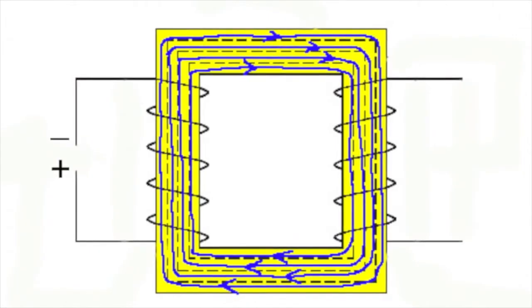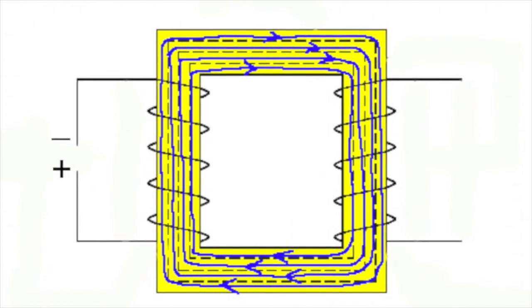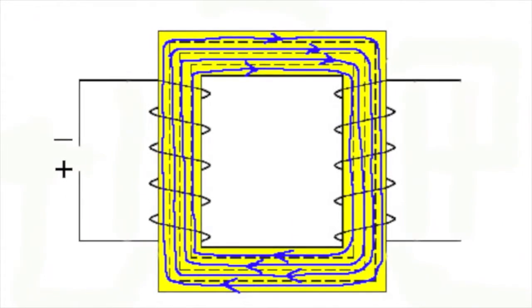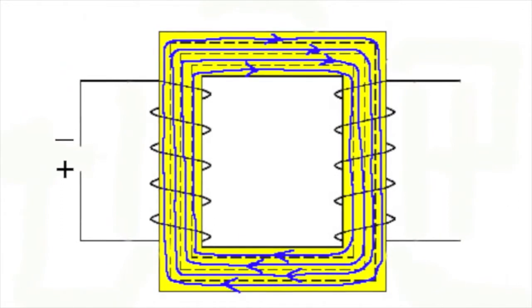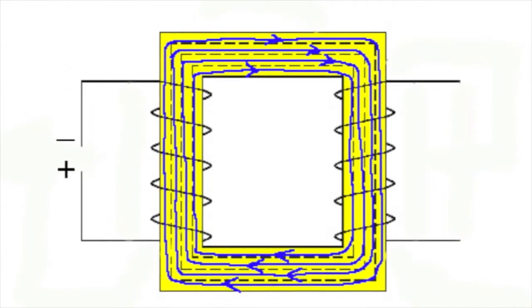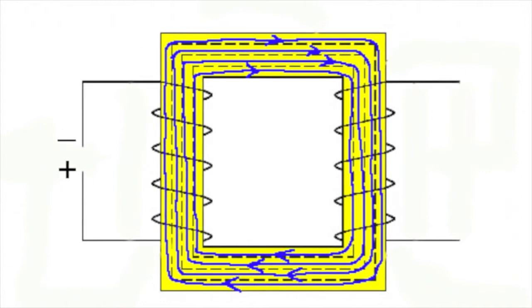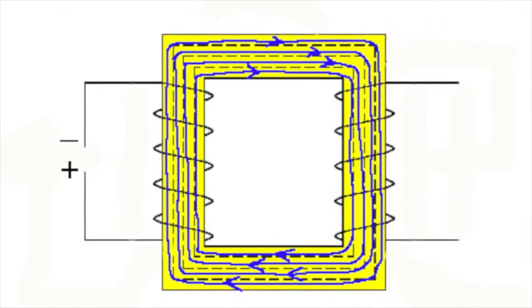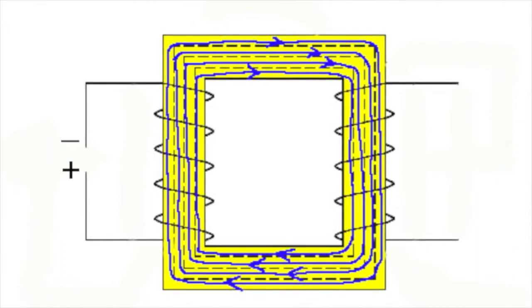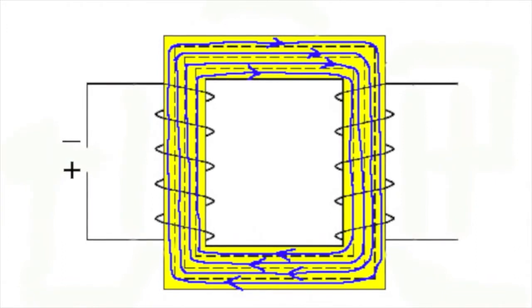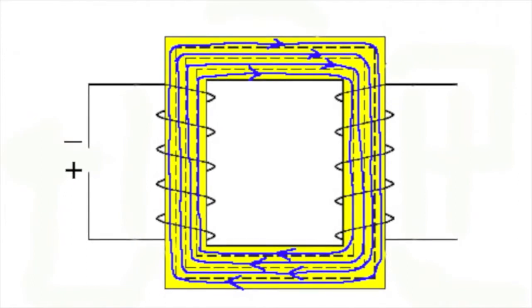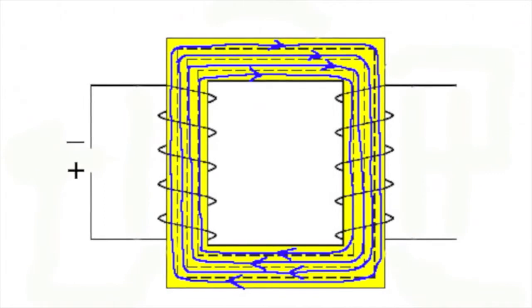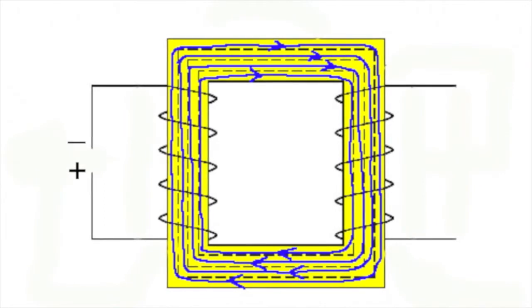No matter whether the transformer is a step up or step down, the way it works is much the same. When a current flows in the primary coil, a magnetic field is created which flows all the way around the core. This magnetic field cuts through the secondary coil and induces an EMF in it. When the current is switched off, the field collapses and again an EMF is induced in the secondary coil, but this time because the field is collapsing in the opposite direction.